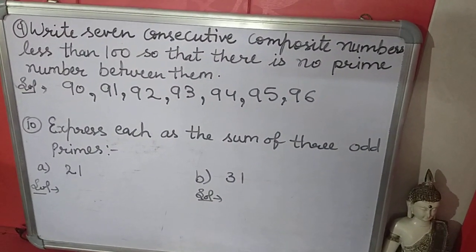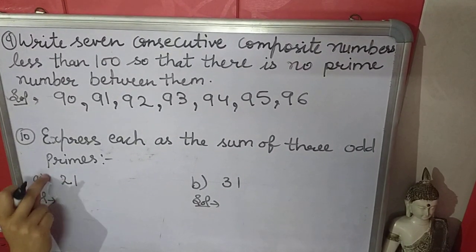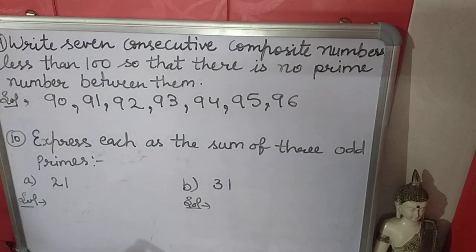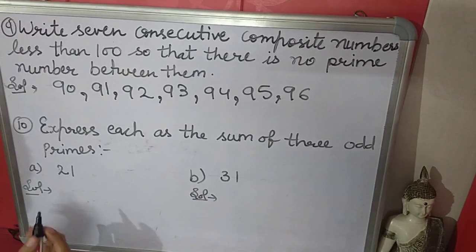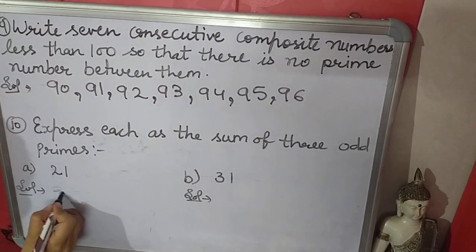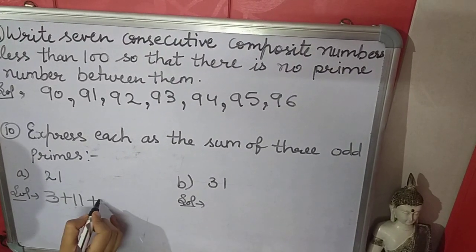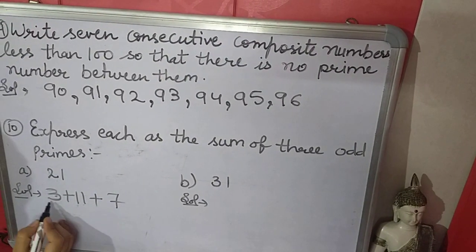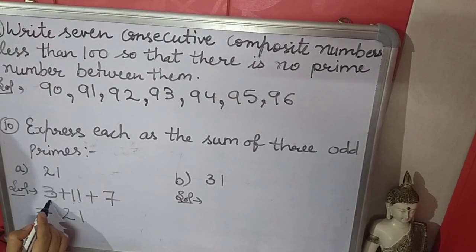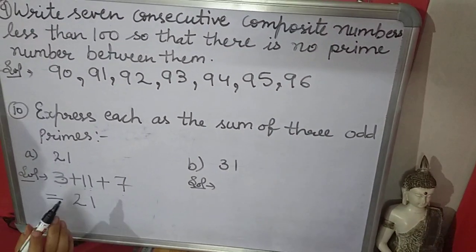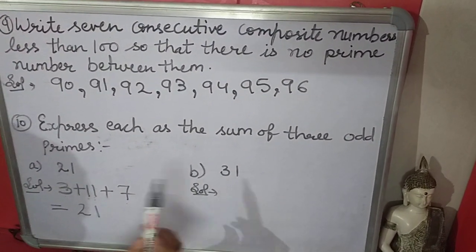The 10th question is: express each of the following as the sum of 3 odd prime numbers. The numbers should be odd and prime. For 21, I will take 3 plus 11 plus 7. When we add these 3 numbers, 21 comes. These 3 numbers are all odd and prime. You can take other combinations also.